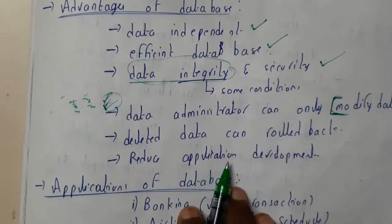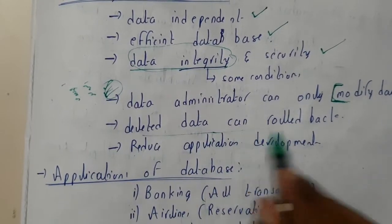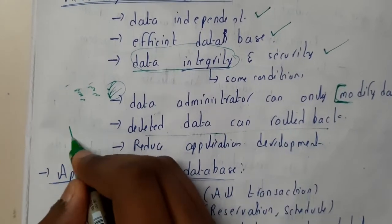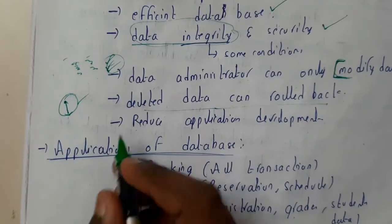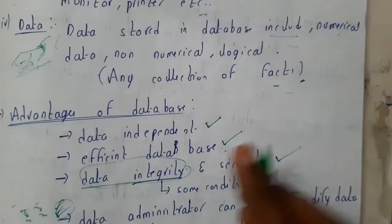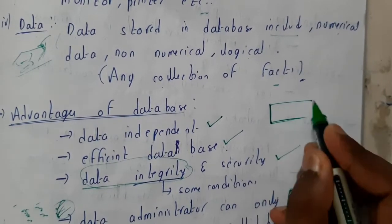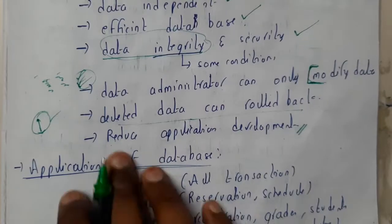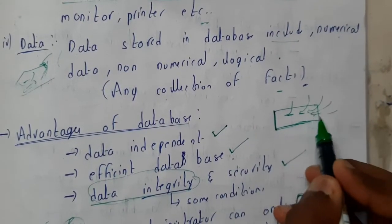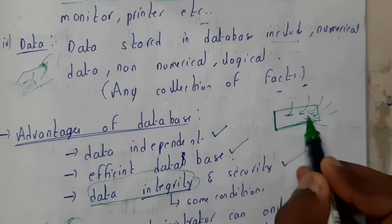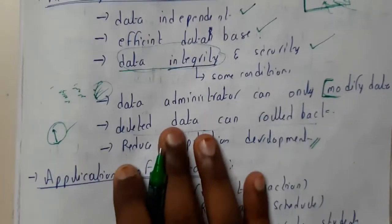Deleted data can be rolled back by using the rollback command in SQL. We also reduce application development time — for example, if you are designing an application for a shopping mall, we can use a database for accessing files, storing receipts, bills, and the purchasing cost of products, making access really easy and faster.